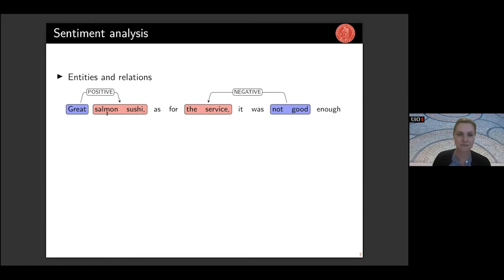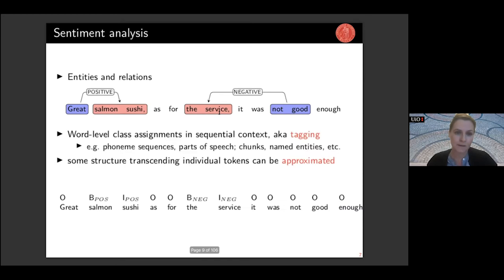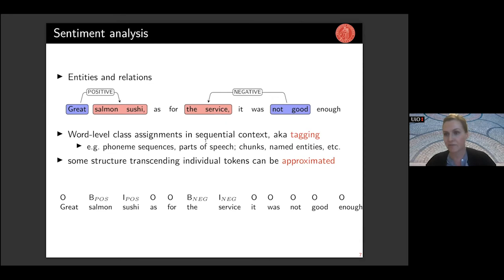For example, from a restaurant review one could extract a positive attitude towards 'salmon sushi' — an entity that consists of two words — and a negative sentiment signaled by the expression 'not good' towards the service of this restaurant. This is a mixed sentiment situation. The way this is often modeled is by performing word-level class assignments in sequence — what we often term tagging — and this approach applies to many NLP tasks: classifying phonemes, parts of speech, named entities which assigns semantic classes like person or organization.